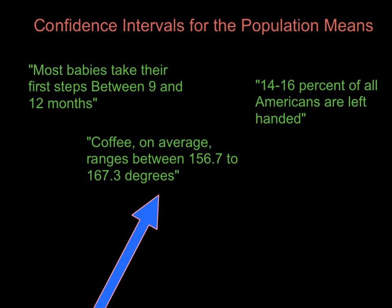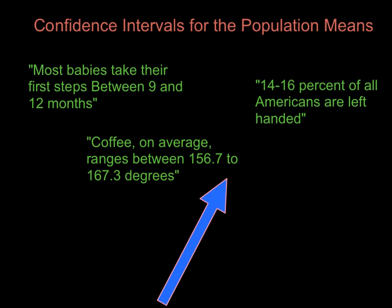And a quality control officer will gather samples, get the mean of the sample, and then make sure by using a confidence interval that that output is still giving that range of coffee that they want. And if it goes outside that range, then they need to recalibrate.